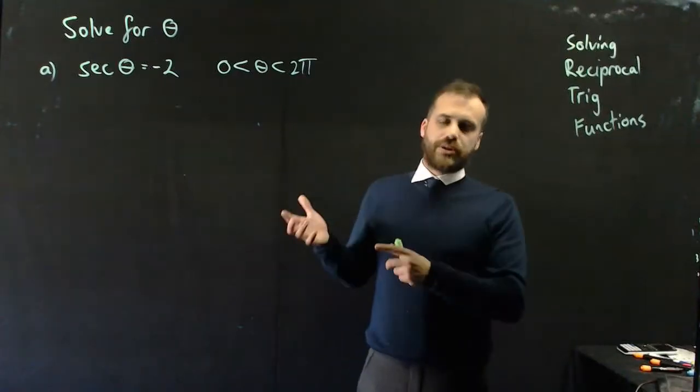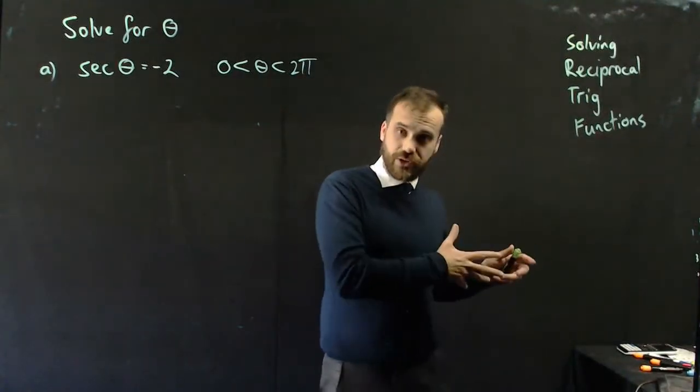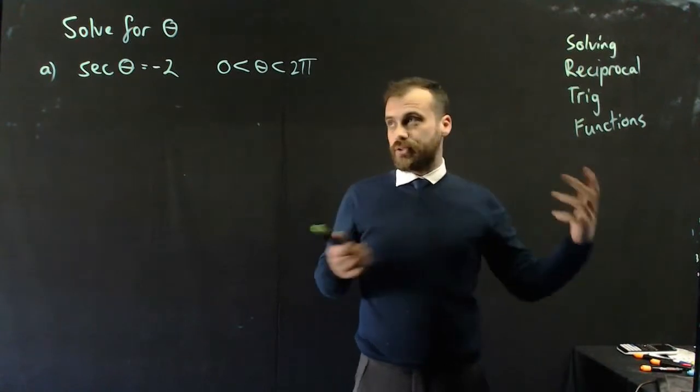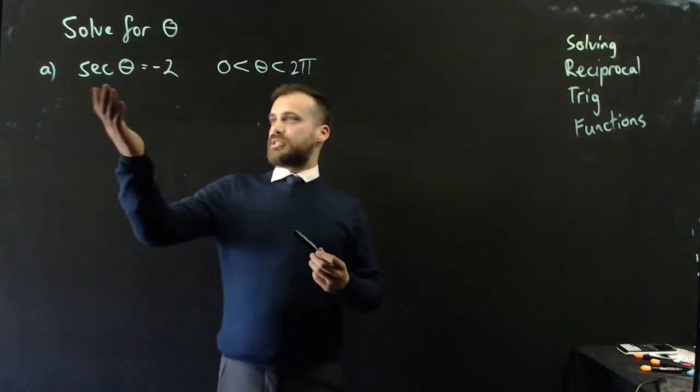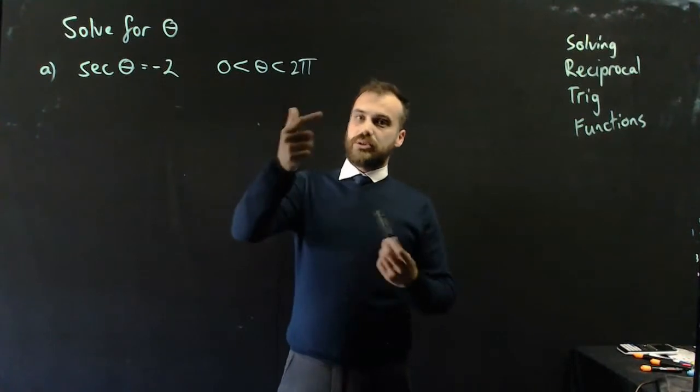Alright, so obviously this was coming. If you know what a reciprocal function is and you can find exact values for it, then you should be able to solve them as well. So sec theta equals negative 2, and we solve it between 0 and 2 pi.